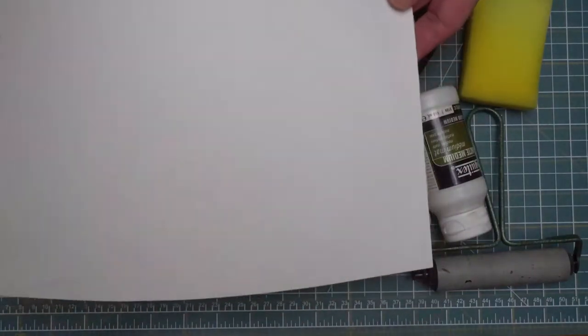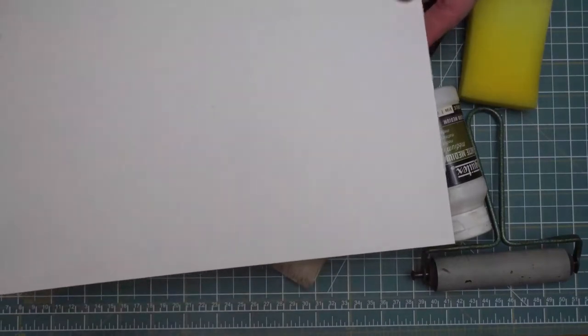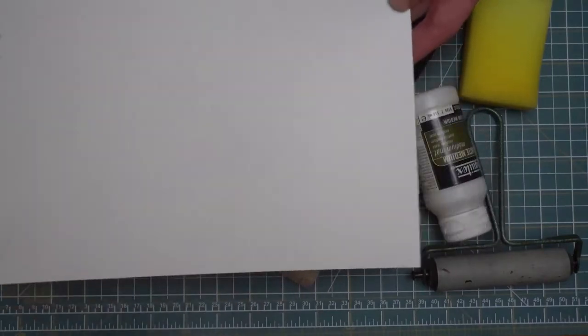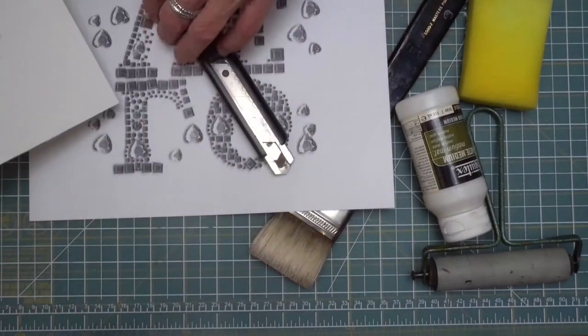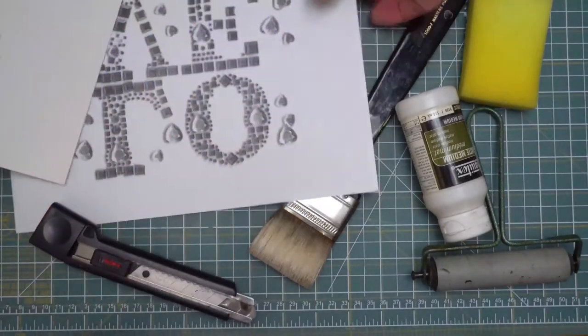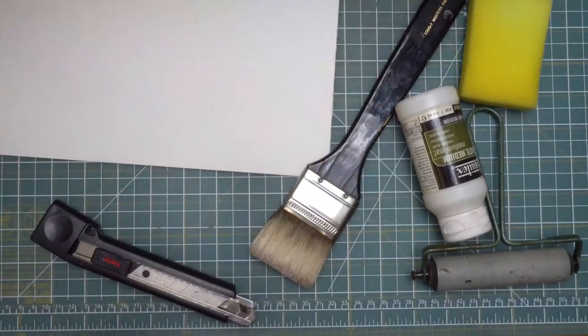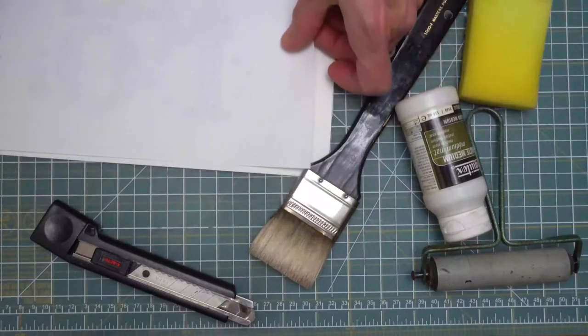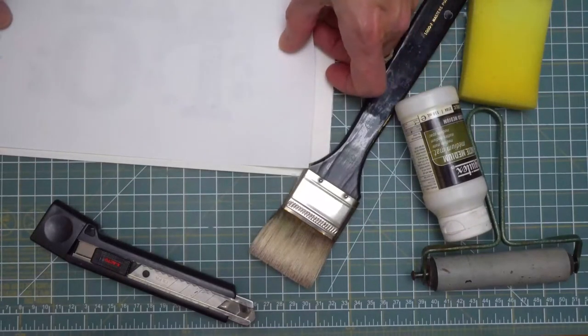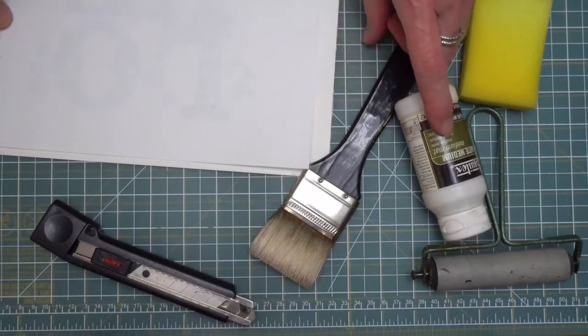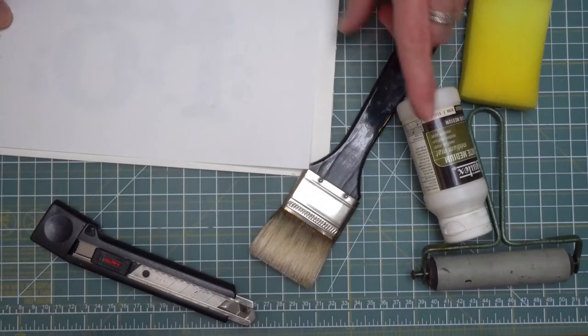And you could also use watercolor paper, wood panel, canvas, primed or unprimed, and any other number of surfaces. So that's the substrate and effectively what I'll be doing is I will be adhering this print face down on top of my substrate using the fluid matte medium to adhere the two pieces together.